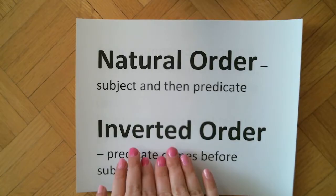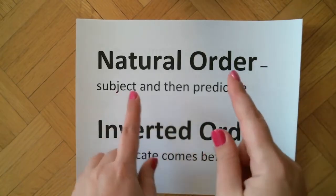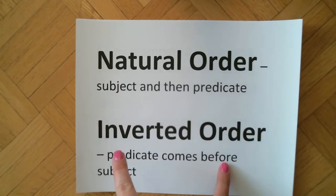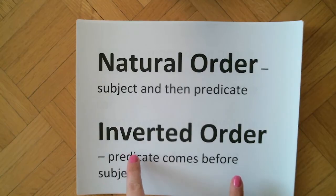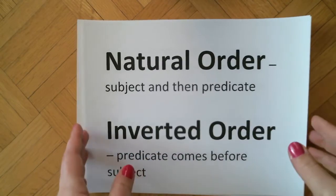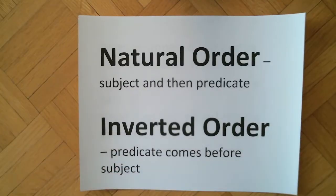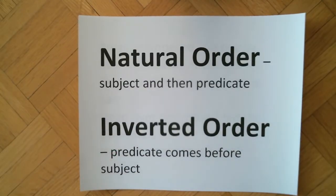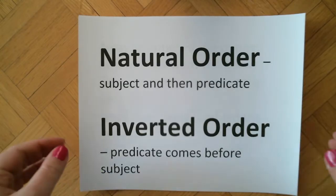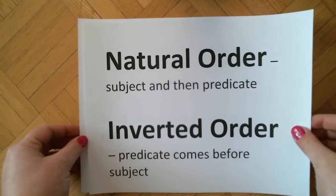Remember: inverted means flipped. If we normally have subject and predicate, inverted order just means predicate before subject. There are a couple of different ways this can appear in a sentence, and some of them are not all that uncommon, even if we don't generally think about how we're making sentences with inverted order.